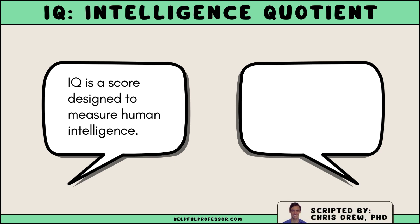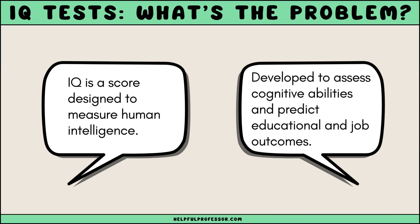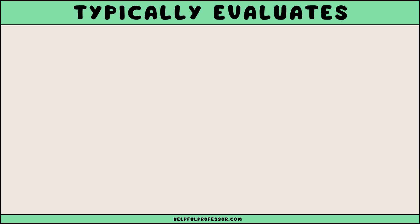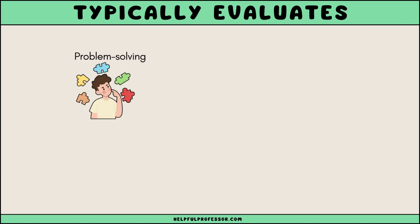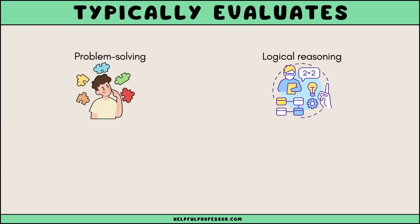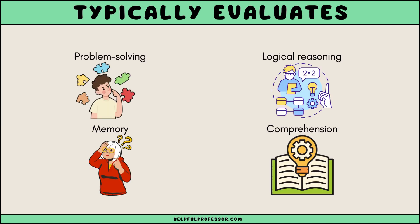IQ, or intelligence quotient, is a score derived from standardized tests designed to measure human intelligence. The concept of IQ was developed to assess cognitive abilities and predict educational performance and job success. An IQ test typically evaluates various types of cognitive abilities including problem solving, logical reasoning, memory, and comprehension.